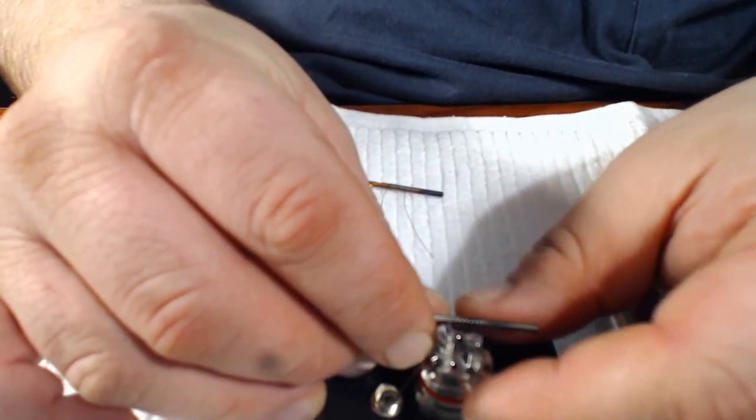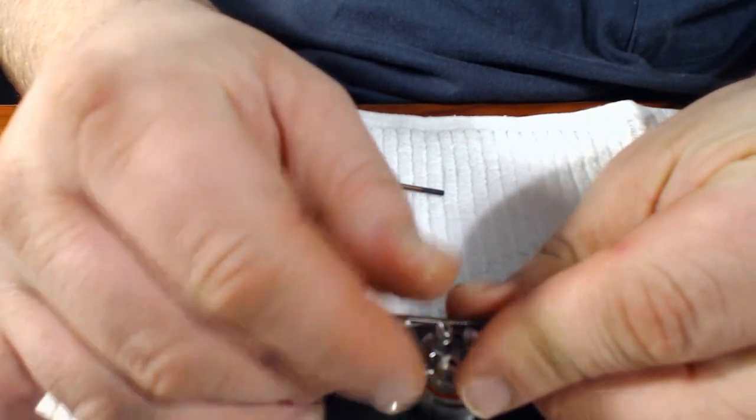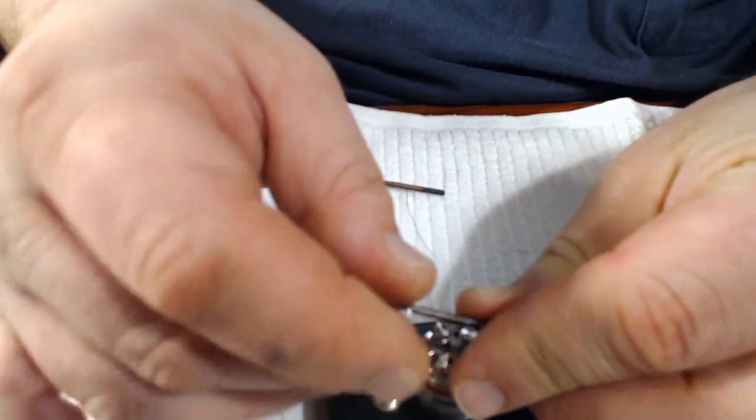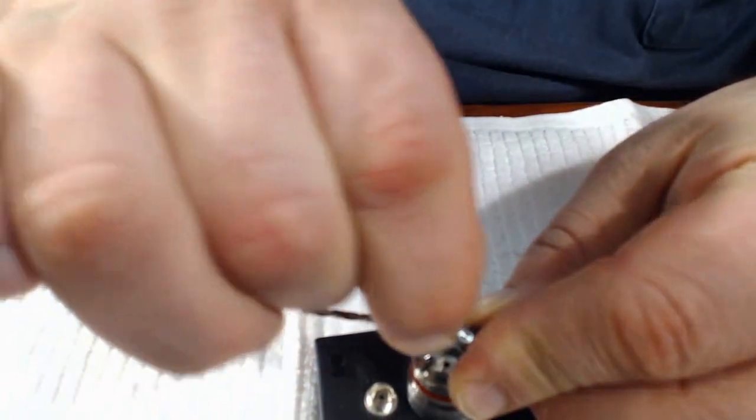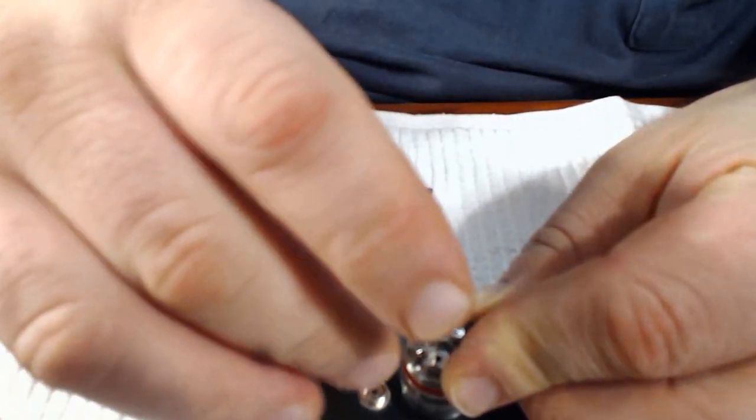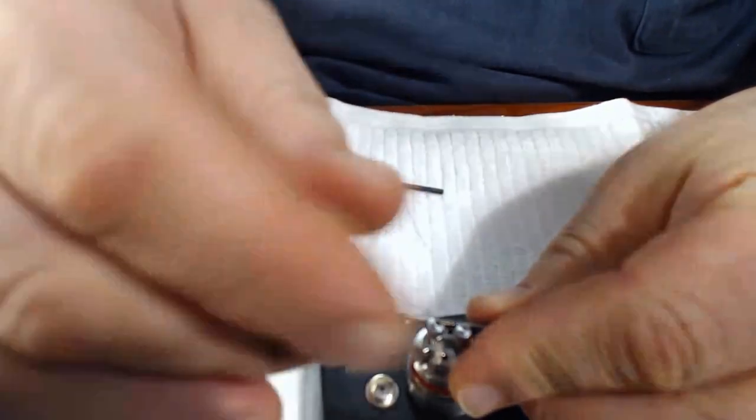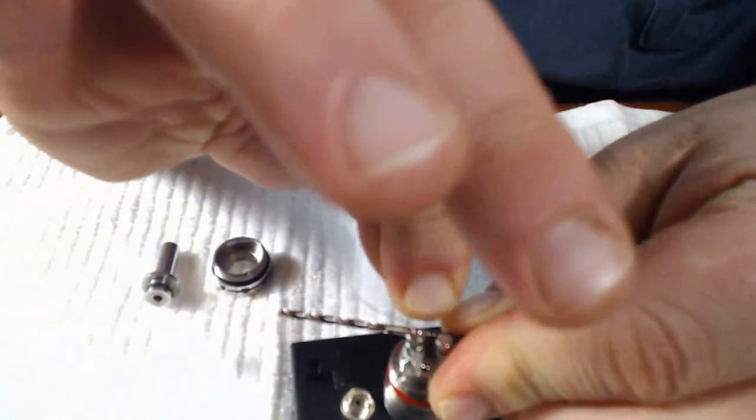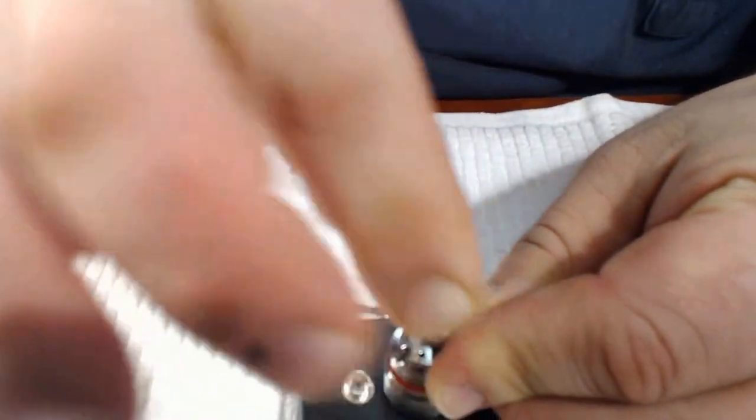I'm going to put them on the outsides. Once you get one on, it becomes a little easier. Twist it around and then I pull it straight up. Again the other side: twist it around and I pull it straight up.